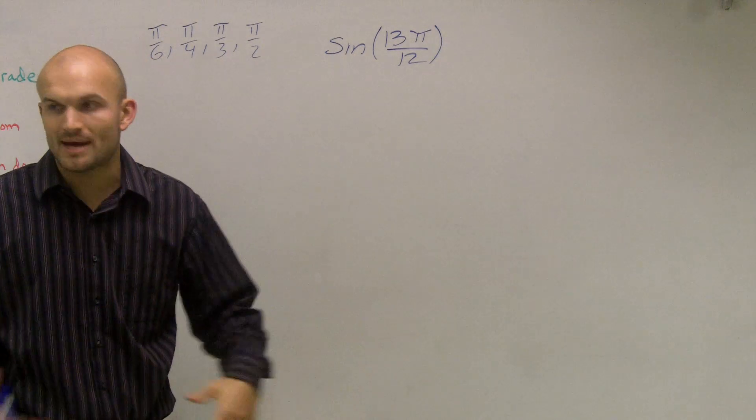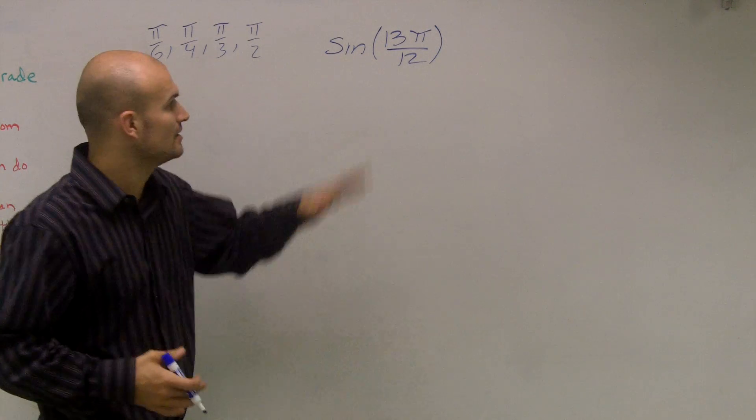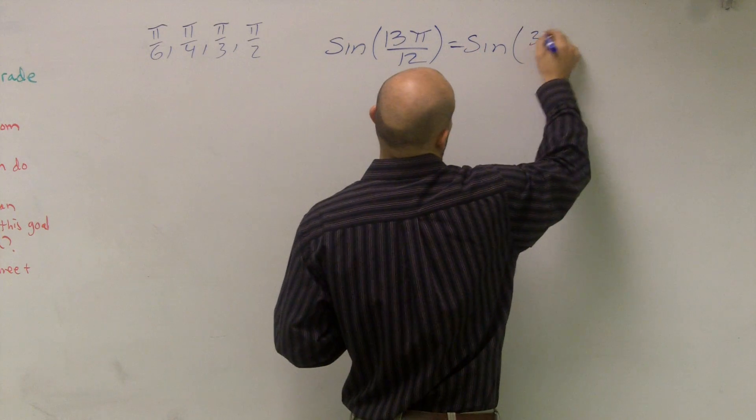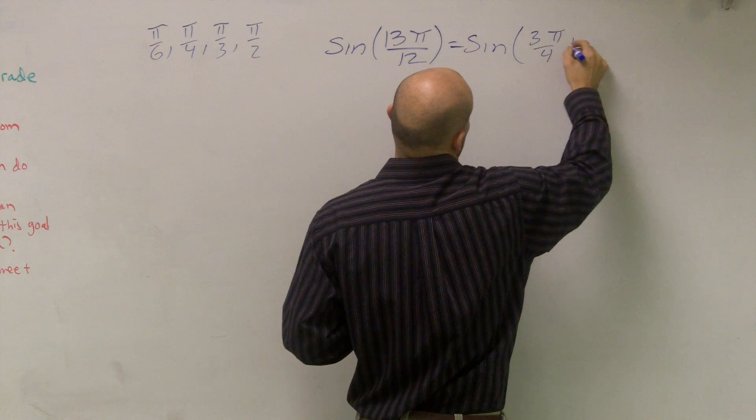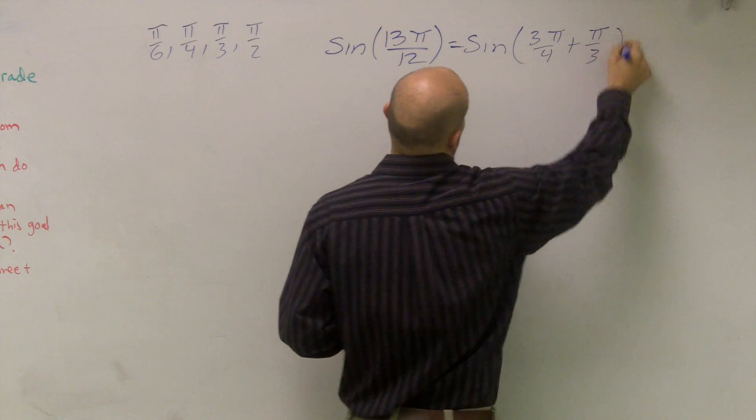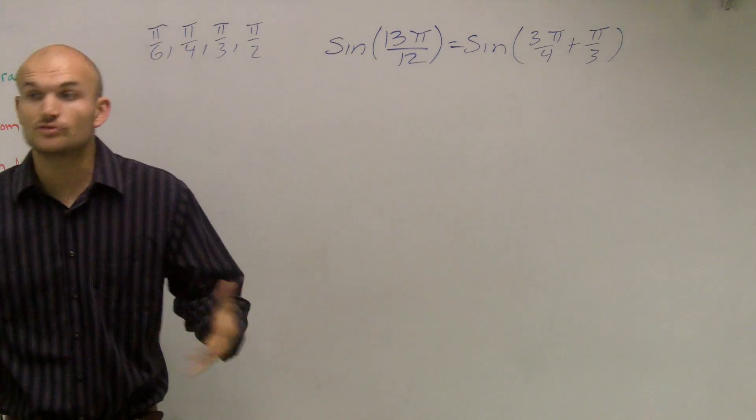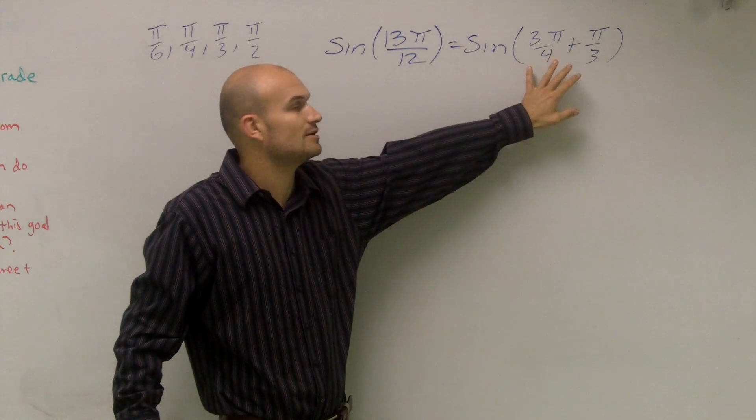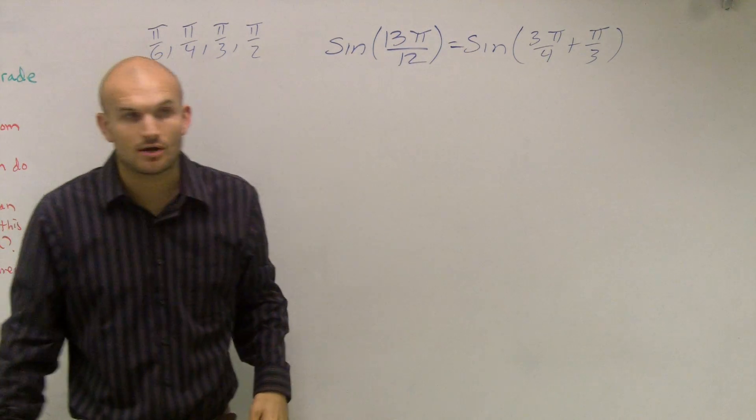Well, I just did a little math to make this video go a little bit faster. I was able to determine that I could rewrite this as sine of 3π over 4 plus π over 3. So therefore, when you do the mathematics and combine these with their denominators, you will get 13π over 12.